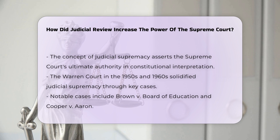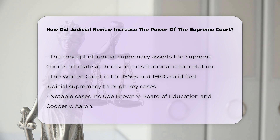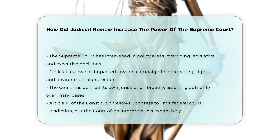This notion was further solidified by the Warren Court in the 1950s and 1960s, particularly in cases like Brown v. Board of Education and Cooper v. Aaron, where the court asserted its supremacy in interpreting the Constitution. The Supreme Court's aggressive use of judicial review has allowed it to intervene in a wide range of policy areas, often overriding the decisions of the legislative and executive branches. This includes striking down laws related to campaign finance, voting rights, and environmental protection, among others.